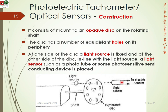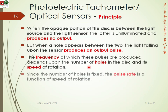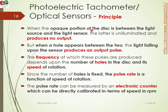On the other side we use a light sensor aligned with the light source. The light sensors are photosensitive semiconductor devices like photodiodes or phototransistors. When the disc rotates, the holes allow light to pass, generating pulses as output. The frequency depends upon the number of holes in the disc and the speed of rotation. Since the number of holes is fixed, the pulse rate is mainly a function of the speed of rotation.